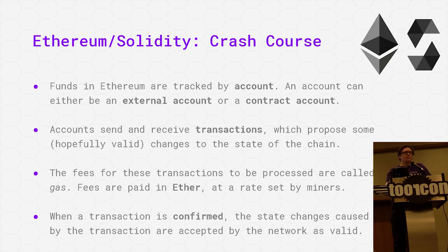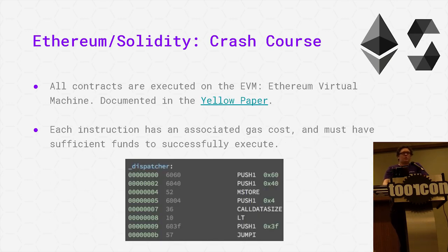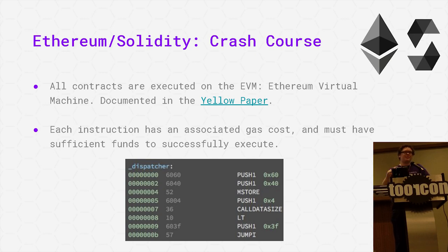The fees for these transactions are called GAS, paid in Ether or ETH, the default currency on the platform. These contracts all compile down to simple bytecode that runs on something called the EVM, the Ethereum Virtual Machine. It's documented in a paper; we won't go over it too much here because most of these tricks don't depend on knowing all that much about it. Each instruction has an associated cost, so the interpreter is Turing complete — the caveat being that every instruction you run costs you money.